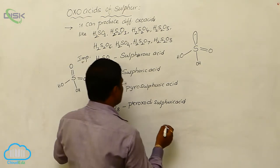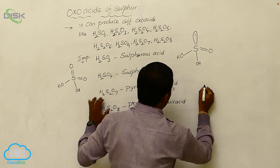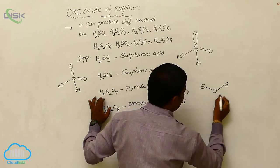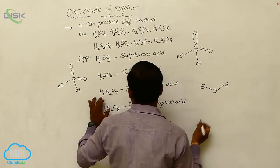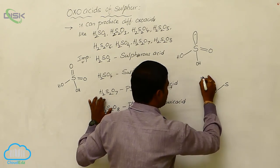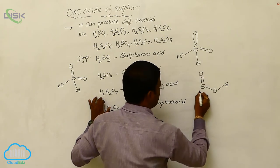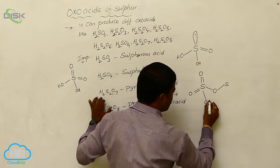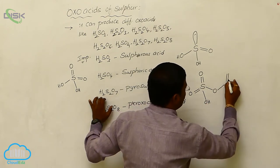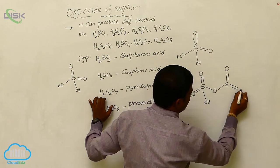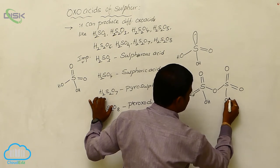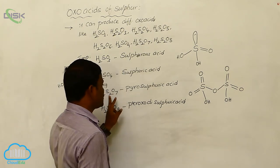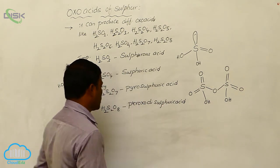The structure of pyrosulphuric acid H₂S₂O₇ features an S–O–S bond linkage. Each sulphur has two double-bond O groups and one OH group on either side of the bridging oxygen. So H₂S₂O₇ is its molecular formula.